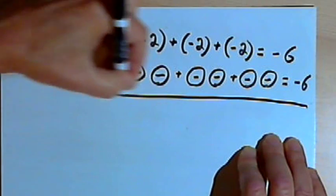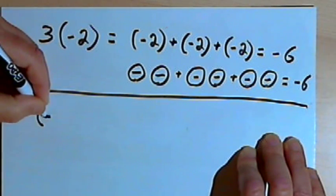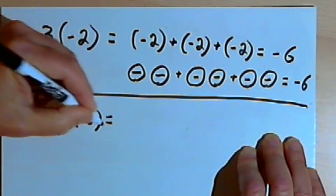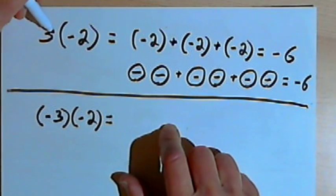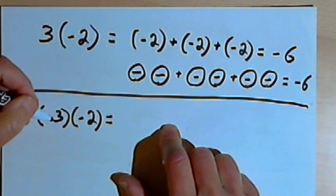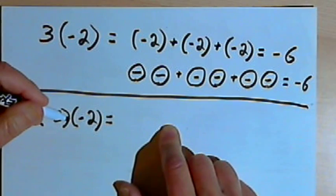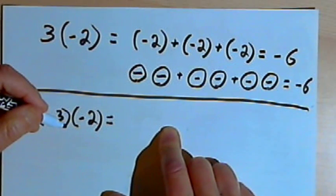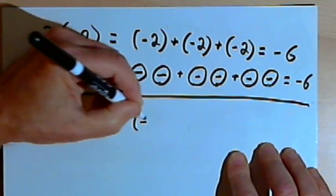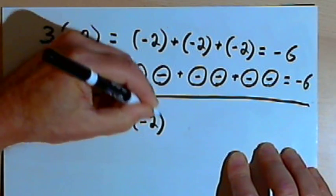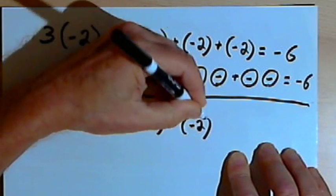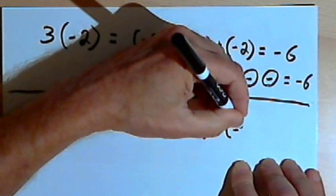Now, let's compare that with the multiplication problem of negative 3 times negative 2. Well, if positive 3 times negative 2 could be thought of as repeated addition, then negative 3 times negative 2 would mean I'm repeatedly subtracting negative 2. So I'm starting from 0, and I'm going to take away negative 2, so I've got a minus negative 2. And then I want to take away another negative 2, so that's minus negative 2. And one more time, minus negative 2.